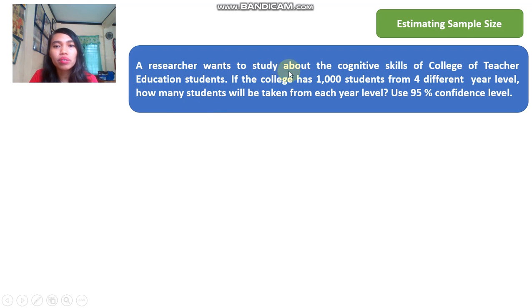Let's read this together. A researcher wants to study about the cognitive skills of college of teacher education students. If the college has 1,000 students from four different year levels, how many students will be taken from each year level? Use 95% confidence level.